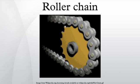Construction of the chain: There are actually two types of links alternating in the bush roller chain. The first type is inner links, having two inner plates held together by two sleeves or bushings upon which rotate two rollers.